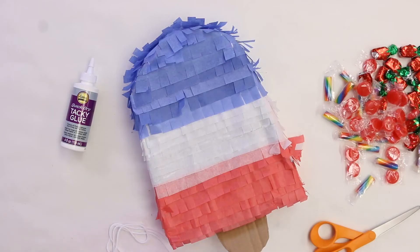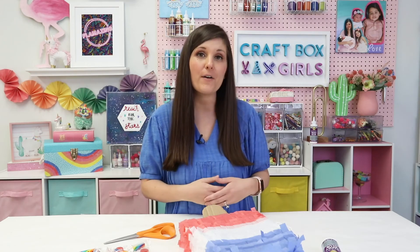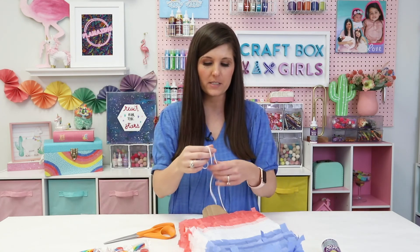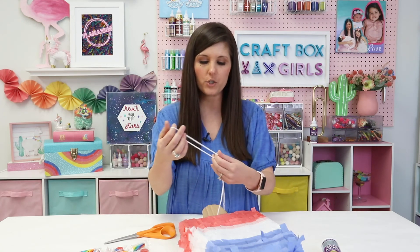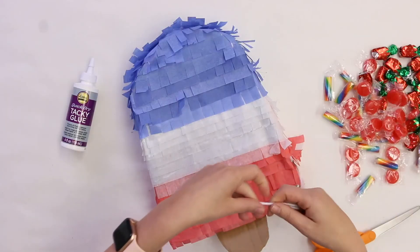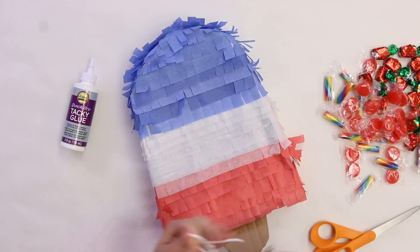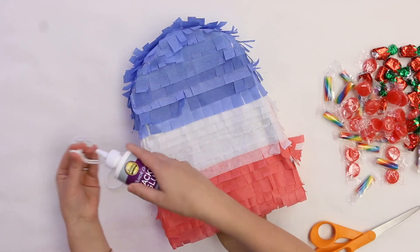Now you can either keep your pinata on a party table as decor and just fill it with candy for fun or leave it empty. Or if you do want to hang it, you want to take a piece of yarn, twine, or string and make a knot at the end. And then we're going to use our glue to glue that to the back of our pinata.